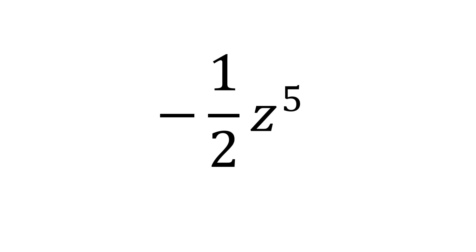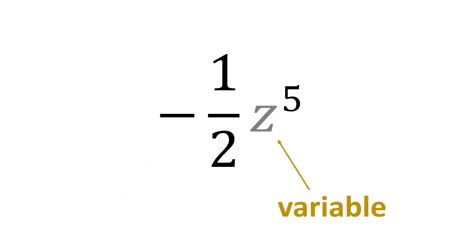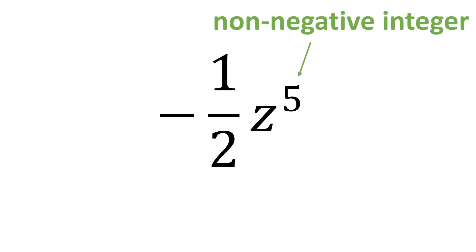Negative 1 half z raised to 5 is also a monomial. In this case, the constant is negative 1 half, the variable is z, and the exponent is 5, which is a non-negative integer.